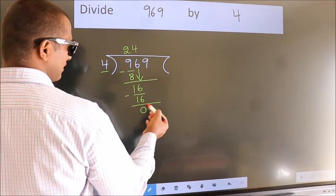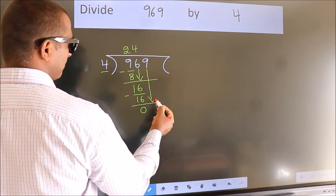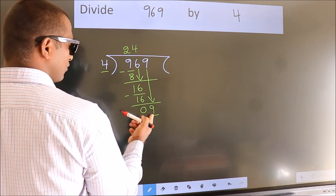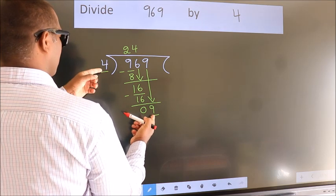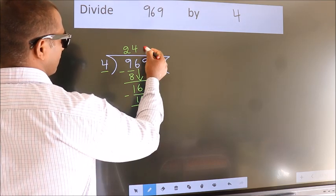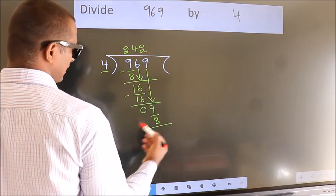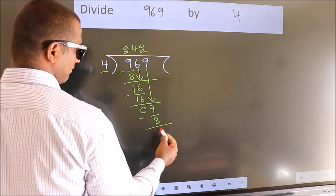After this, bring down the beside number. So 9 down, giving us 9. A number close to 9 in the 4 table is 4 times 2 equals 8. Now we subtract. We get 1.